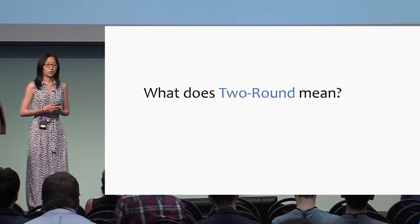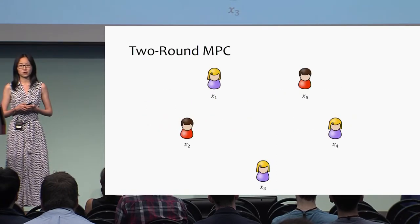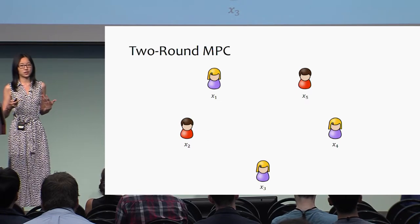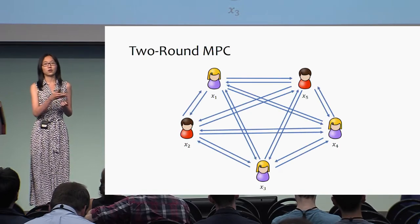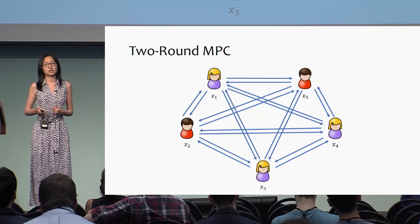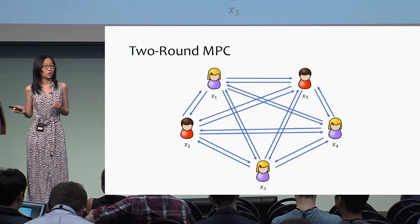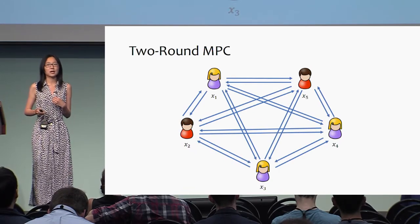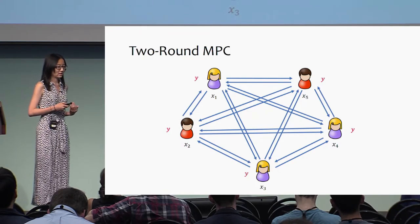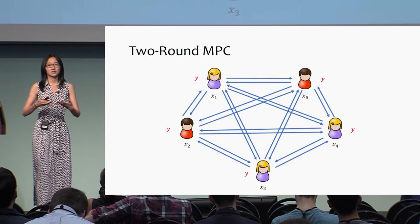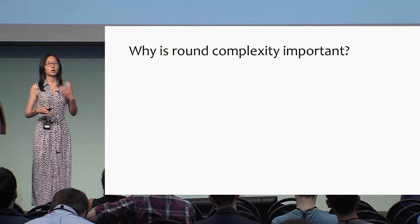What does two-round mean? It means the MPC protocol has two rounds. In the first round, every party broadcasts one message to all the other parties, which depends on their private input. In the second round, every party broadcasts another message to all the other parties, which depends on their private input and the first round messages they have received. At the end of the second round, everyone can figure out the output.